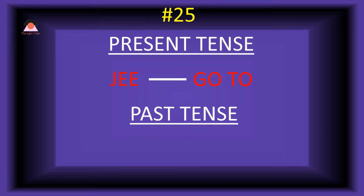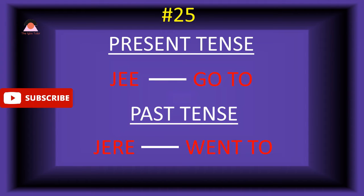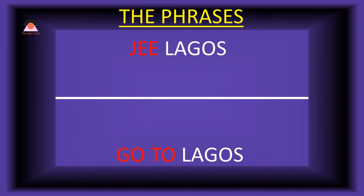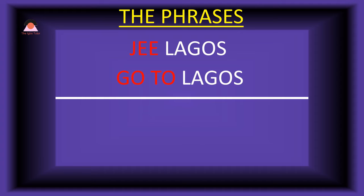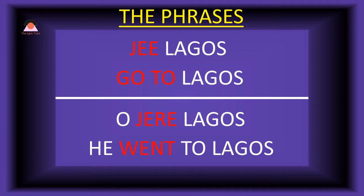Word number twenty-five: 'jie,' meaning 'go to.' We also use 'ga' for this. The past tense is 'jere,' meaning 'went to.' Present tense phrase: 'jie Lagos' — go to Lagos. Past tense: 'o-jere Lagos' — he went to Lagos.